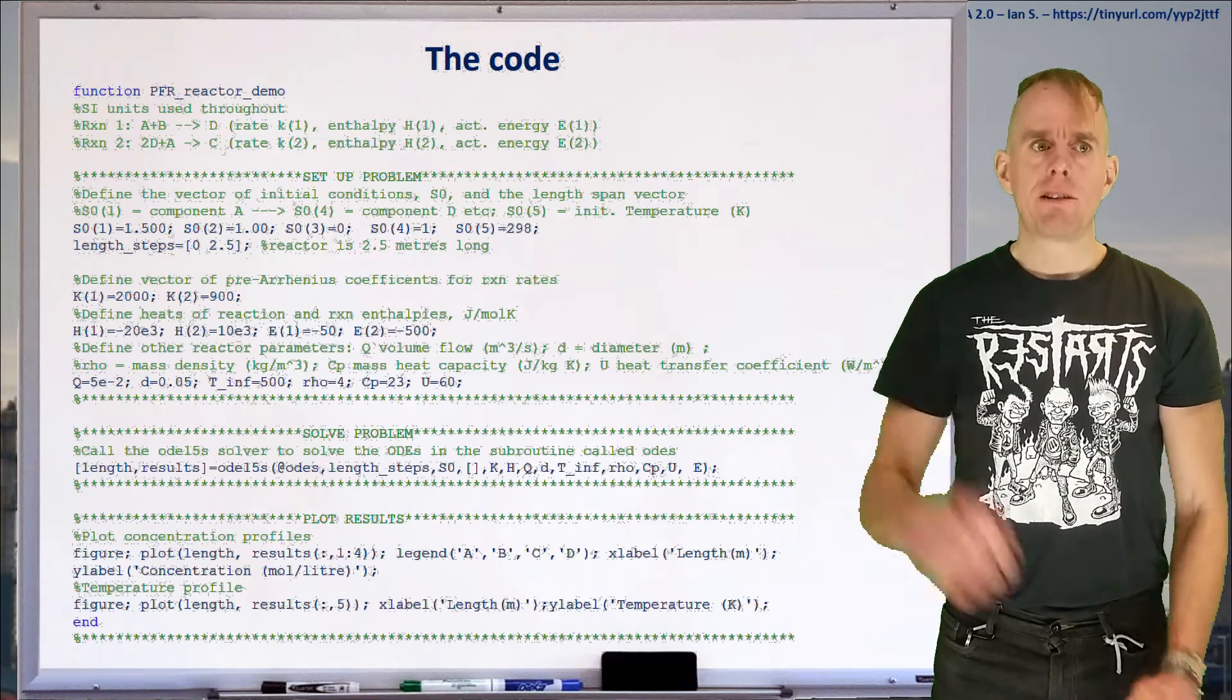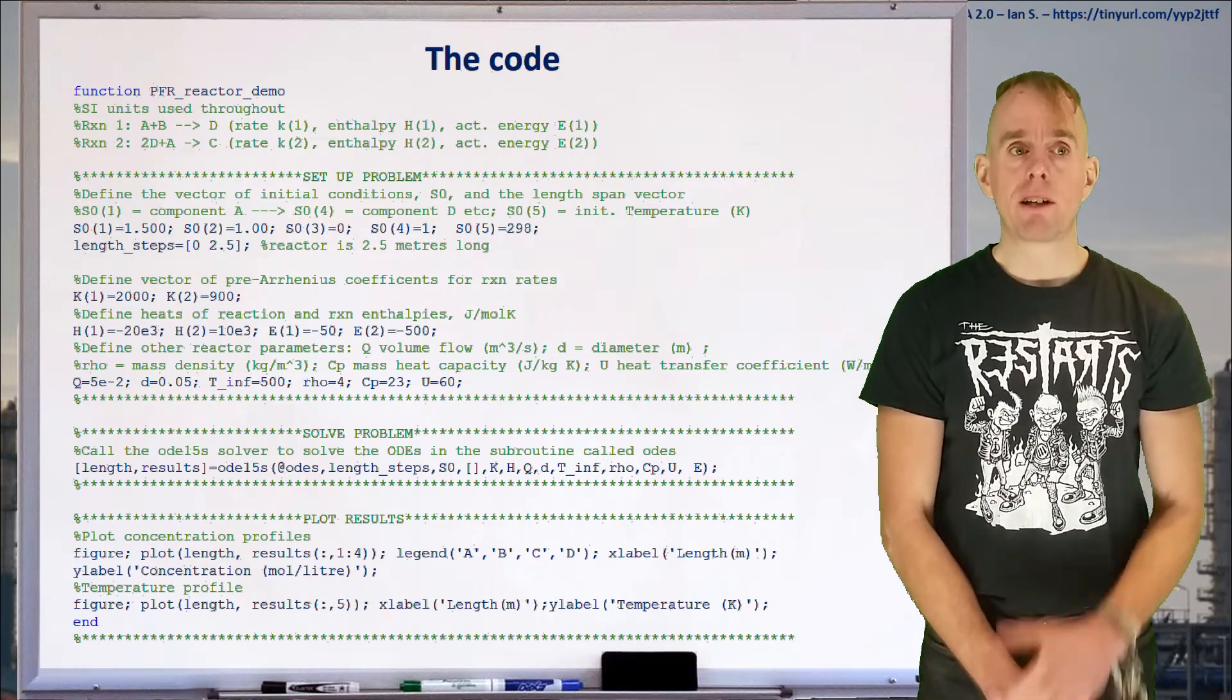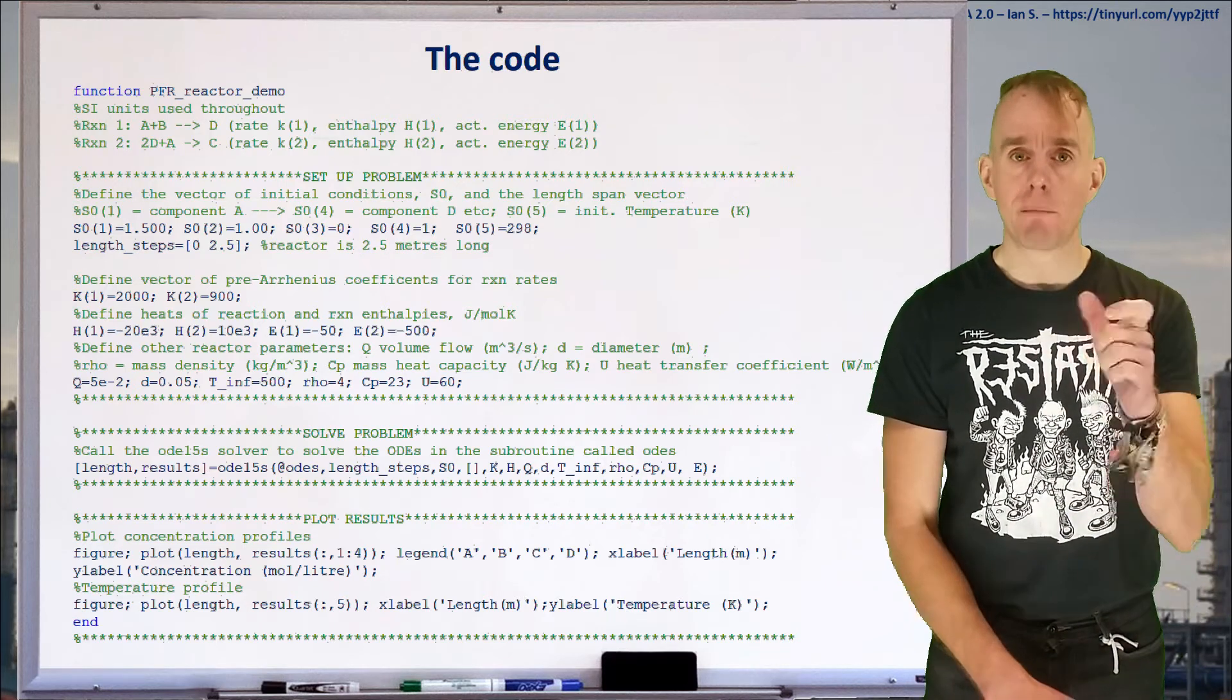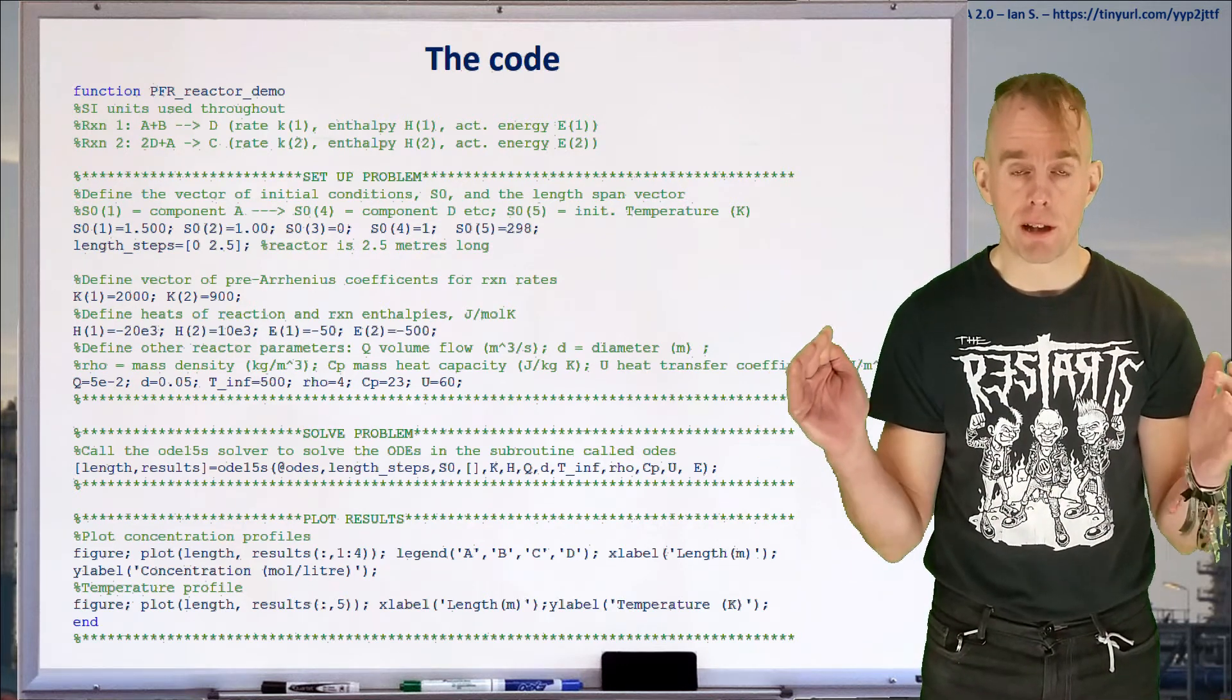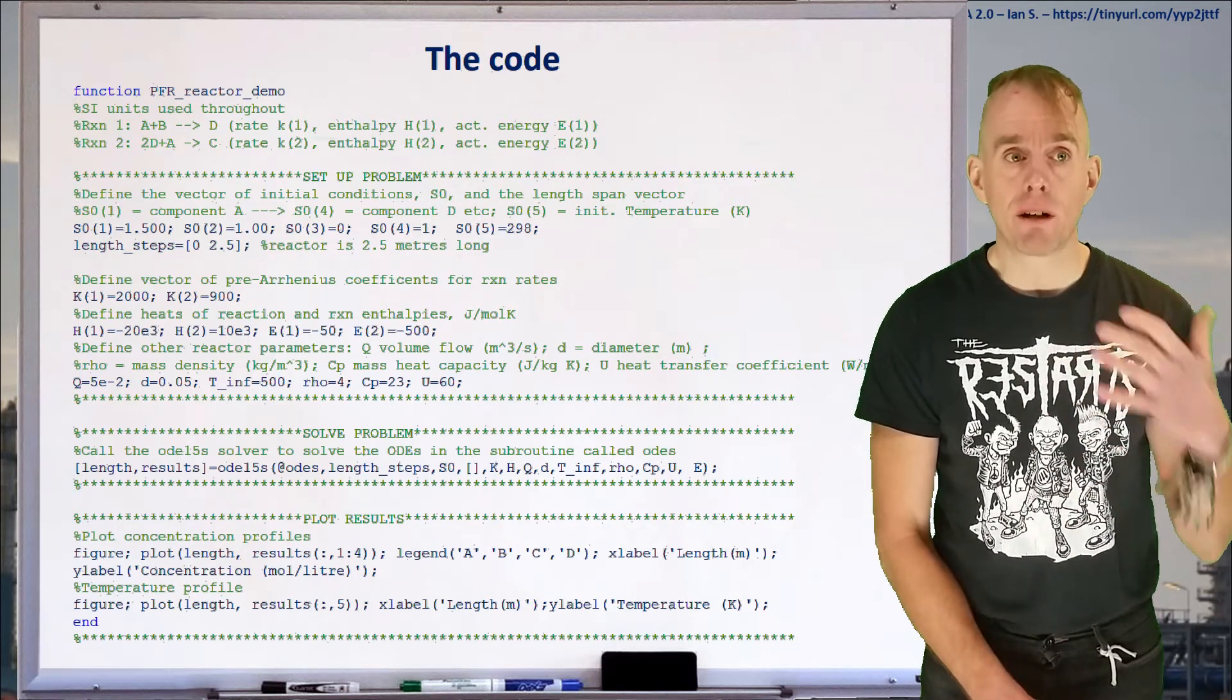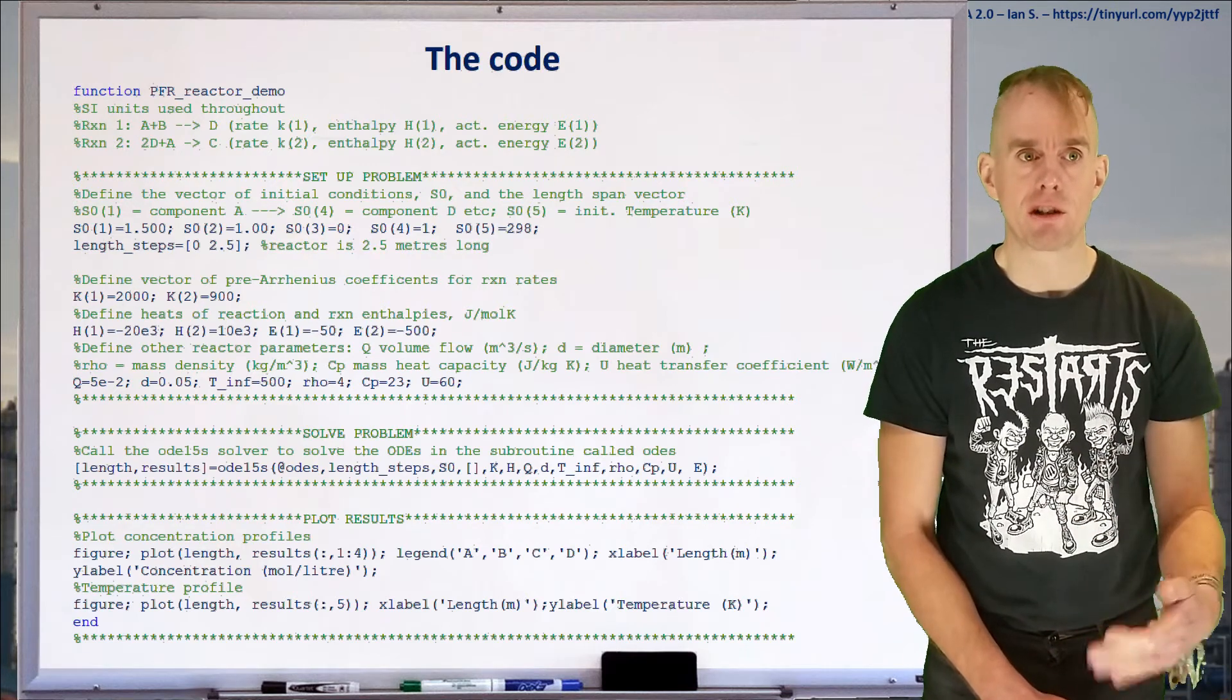Here on the board is a set of code. Feel free to pause and read through it—I've commented it as clearly as possible. The code is broken into three chunks. First, we set up the problem: defining the initial state vector S0, the total length to solve for, and giving numerical values to initial conditions. Then we define the vector of rate coefficients, heats of reaction, and other physical properties like heat transfer coefficients and heat capacities.